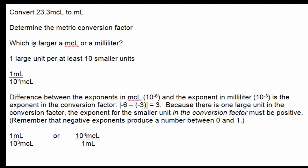This next problem asks to convert 23.3 microliters to milliliters. First, determine the metric conversion factor. The milliliter is larger than the microliter, so the number one goes in front of milliliter and 10 to some exponent goes in front of microliter. The exponent is the difference between the exponent for micro and the exponent for milli, which is 3. Since we need one large unit to equal at least 10 small units, the exponent must be positive 3. The conversion factor can be written as 1 milliliter per 1,000 microliters, or 1,000 microliters per milliliter.